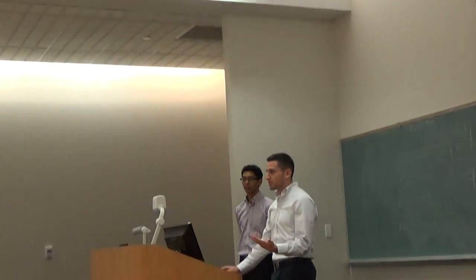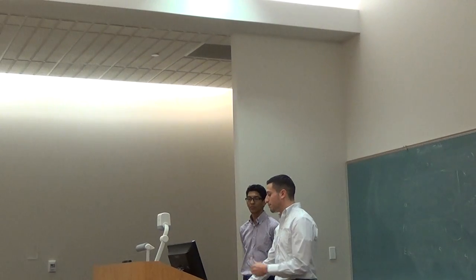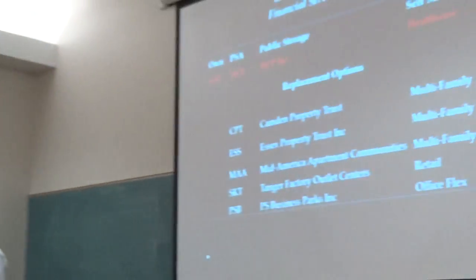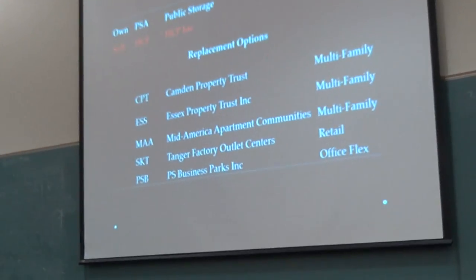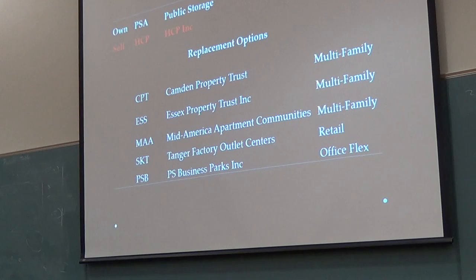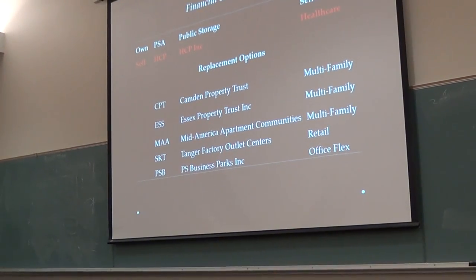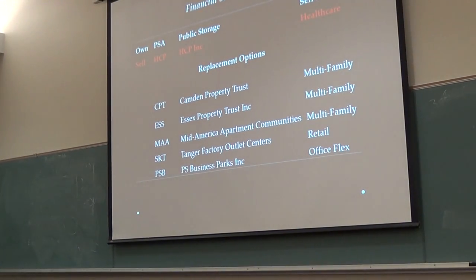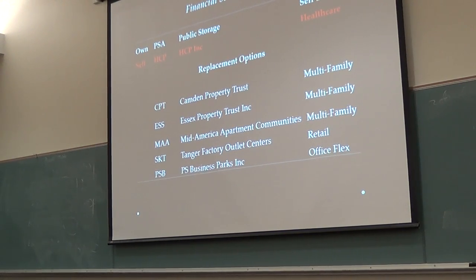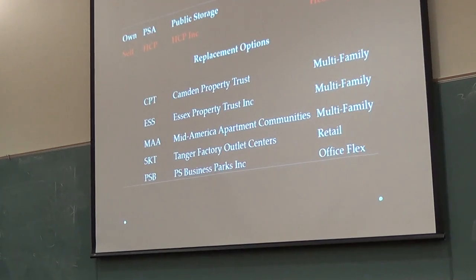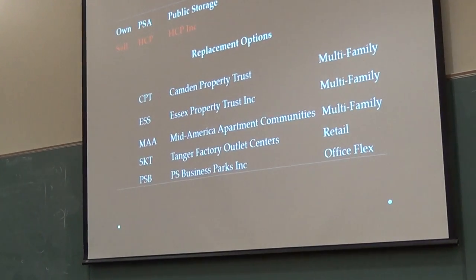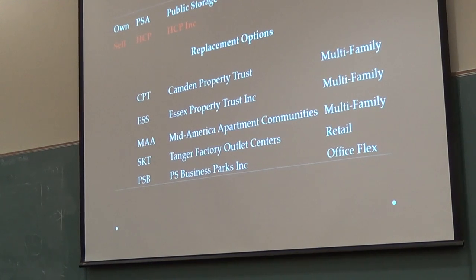From the replacement options — the other companies that made it through the screen — we have Camden Property Trust, Essex Property Trust, MidAmerica, Tanger, and PS Business Parks. On the right they're broken down by property types: multi-family, which is very strong with three coming through, and also retail and office flex.